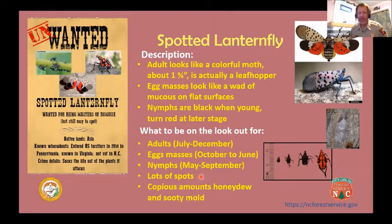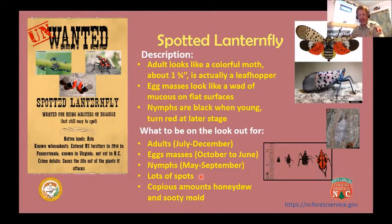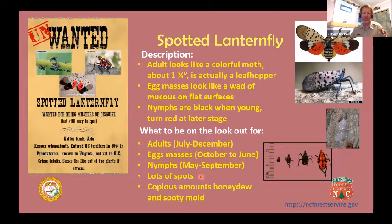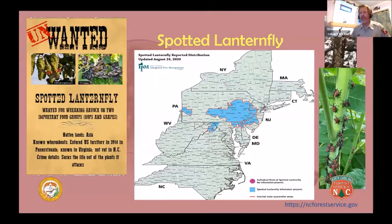The other thing we're going to look for is honeydew. With a leafhopper — any insect with a piercing, sucking mouthpart — they put the straw in the tree, pull the sap out, and what their body doesn't use, they eject out the other end. It's basically liquid insect poop. It is sweet because the tree sap has sugars in it, and it's a good medium for growing sooty mold, which is like a mildew that will grow on top.